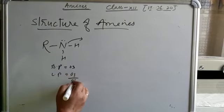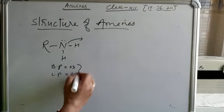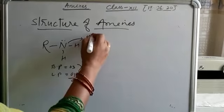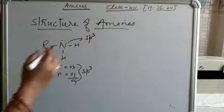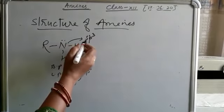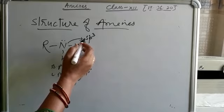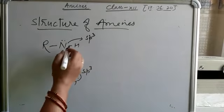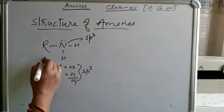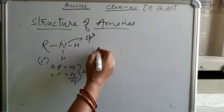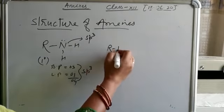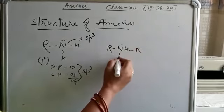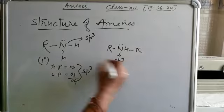The total number comes to 4, which means hybridization is SP3. So hybridization involves three P orbitals and one S orbital. The hybridization of primary amine is SP3. For secondary amine, the hybridization is also SP3.